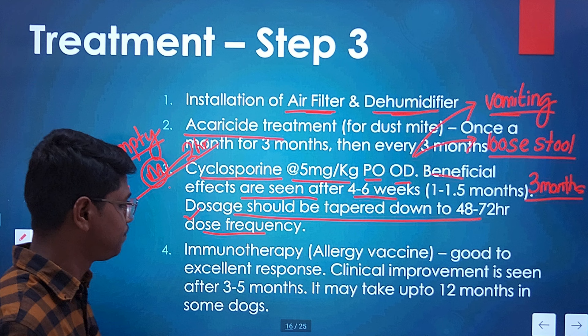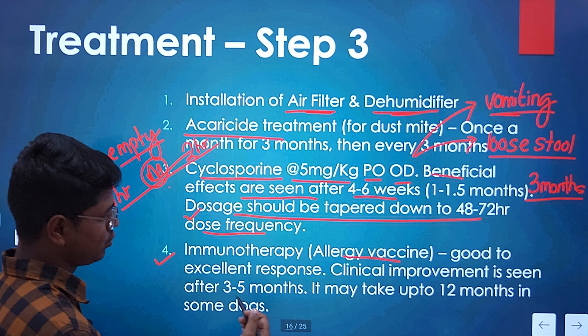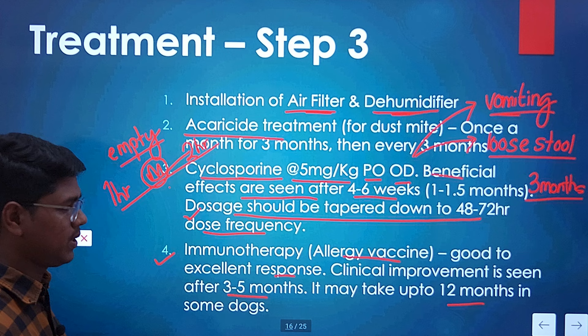Immunotherapy — that is, allergy vaccines — is the last point. It is not, I think, available in India, but there are references showing good to excellent response. Clinical improvement is seen after 3 to 5 months, and it may take up to 12 months in some animals.